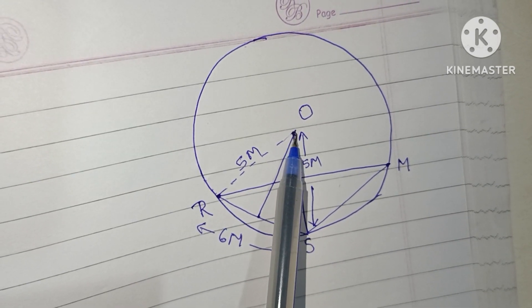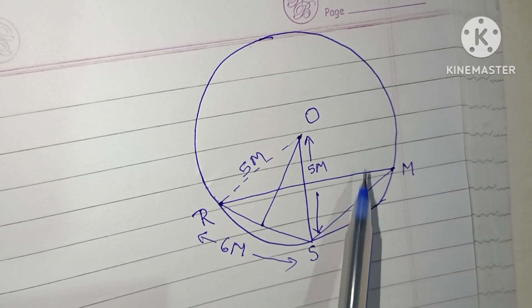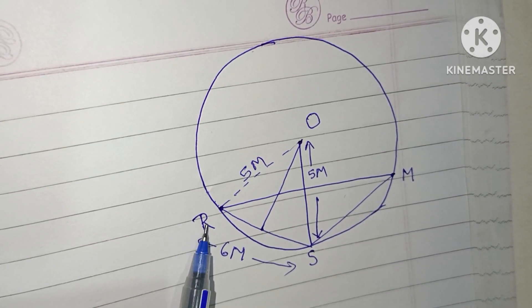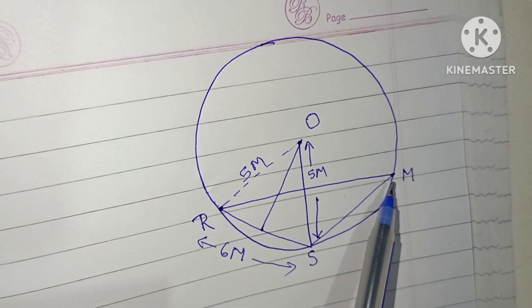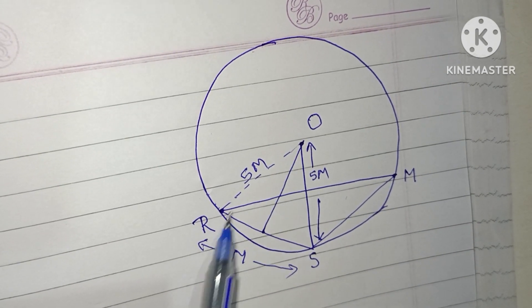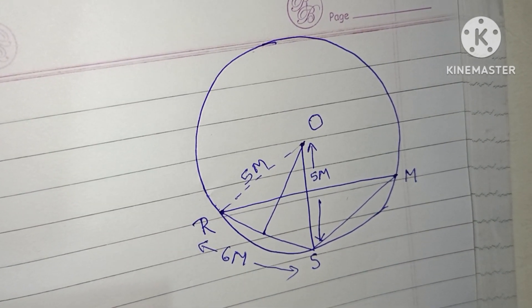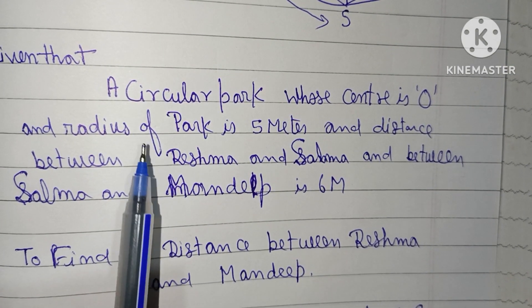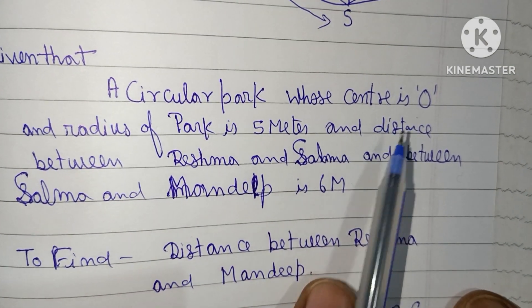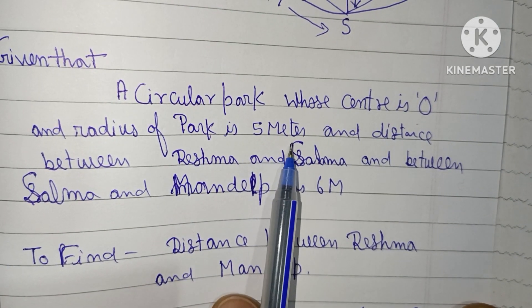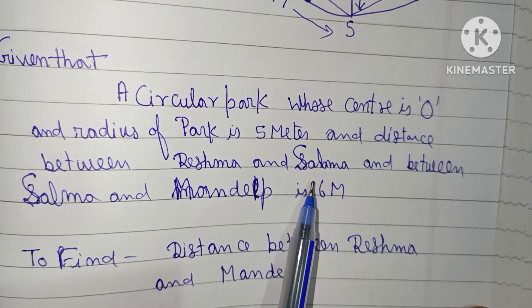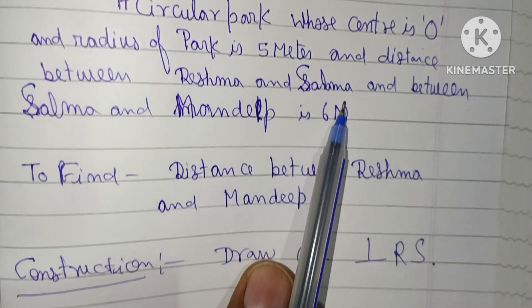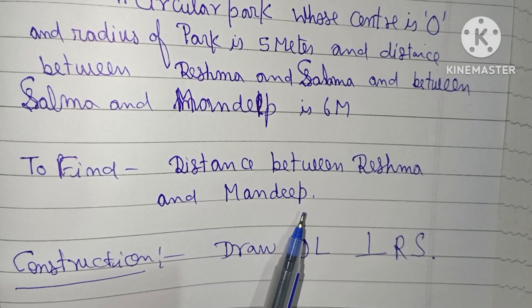Following the solution, let the circular park have center O. Here is Reshma, here is Salma, and here is Mandeep. The distance between them is 6 meters each, and the park radius is 5 meters. Given: circular park with center O and radius 5 meters. Distance between Reshma-Salma and between Salma-Mandeep is 6 meters. Find the distance between Reshma and Mandeep.